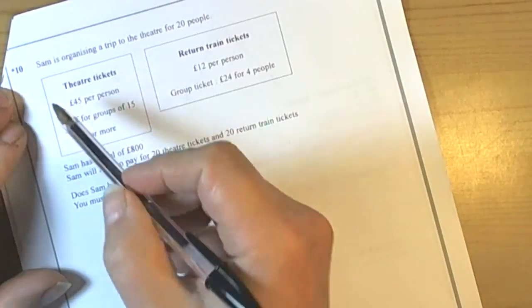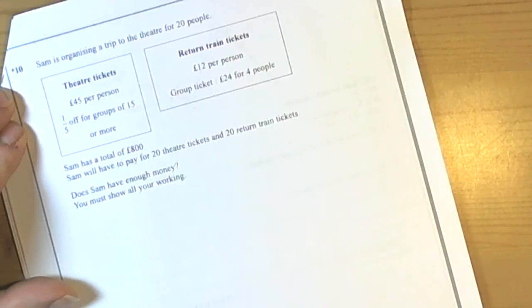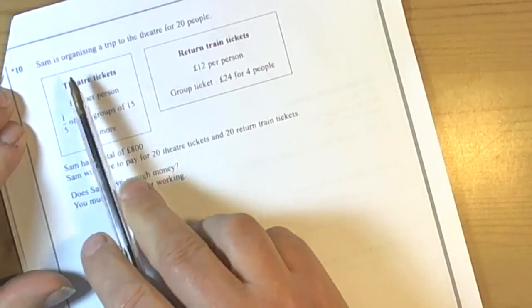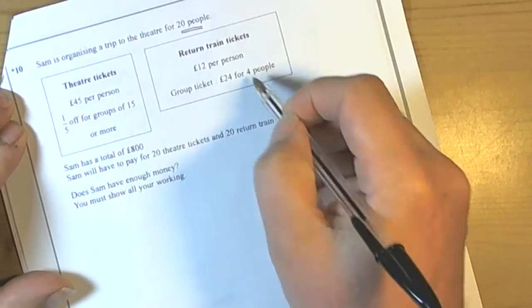OK, so here we have a start question. So we know that we're going to have to do lots of workings out and write a sentence at the end to conclude whatever they wanted us to do. So let's have a look at the information. Sam has organised a trip to theatre for 20 people, so that's important.